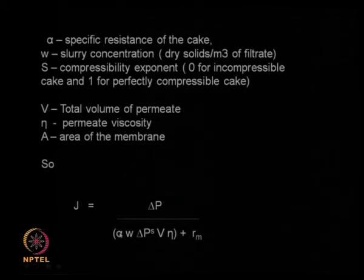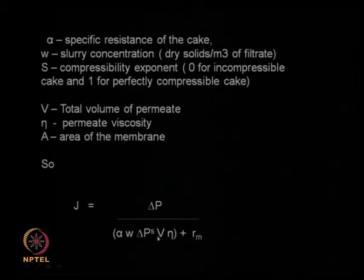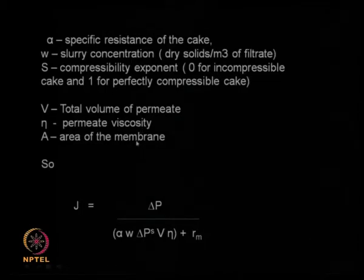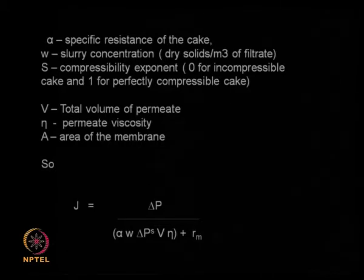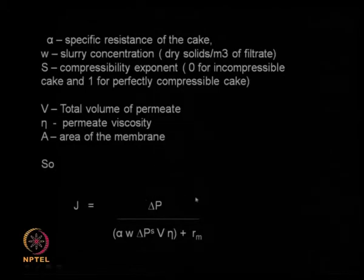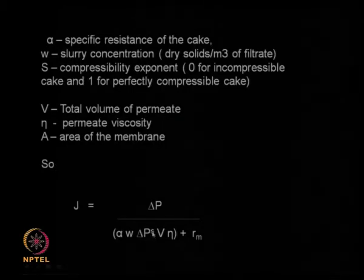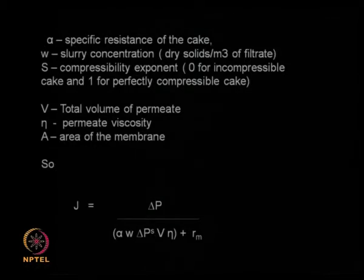The compressibility factor s can vary between 0 and 1. If incompressible, the pressure term disappears; if fully compressible, s = 1. In many cases α, w, η, and total flow rate can be assumed constant. Once the flow rate starts decreasing due to cake compressibility, you stop filtration, do back flushing, dismantle and remove the formed cake, and restart — this is like regenerating your membrane filtration process.